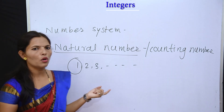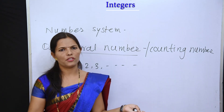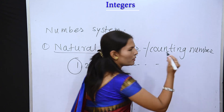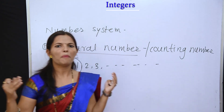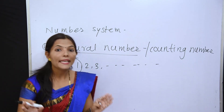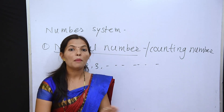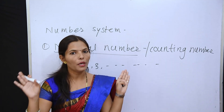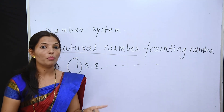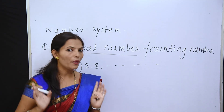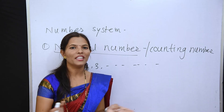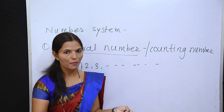Next question that can come: which is the biggest natural number? The answer is infinity. But can you tell the biggest natural number? No. So the biggest natural number cannot be told. So all these are the questions which are asked on the natural number.